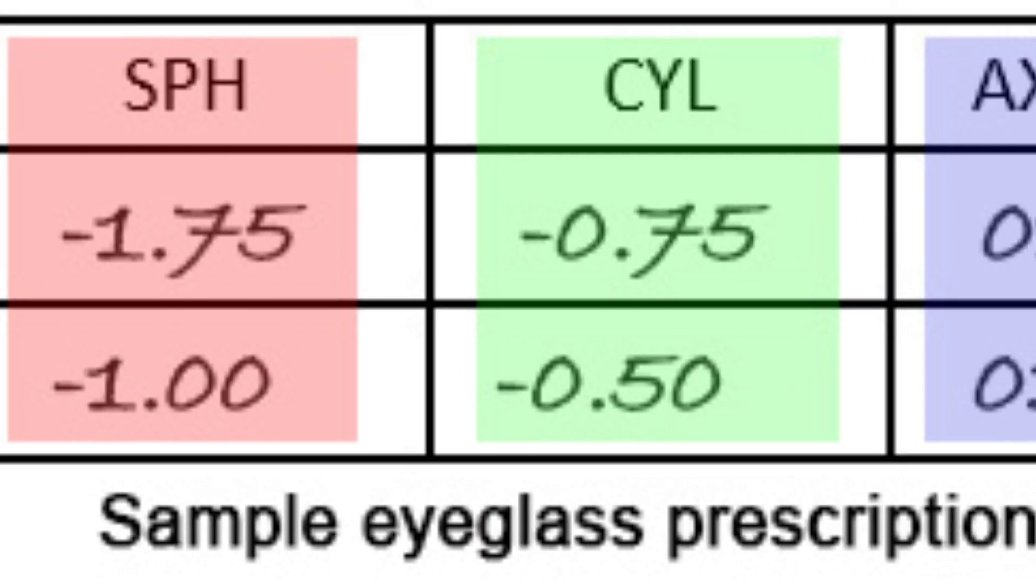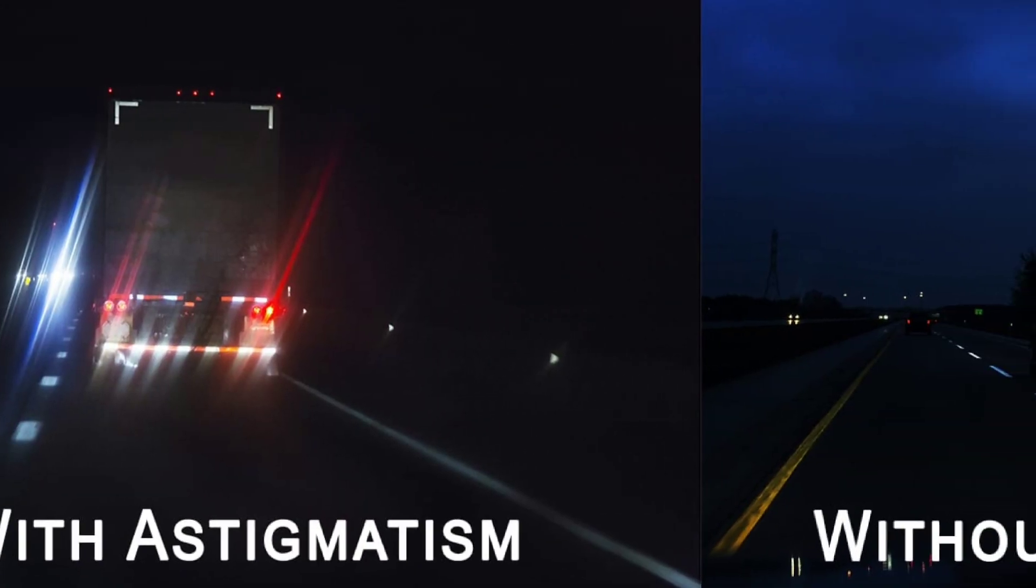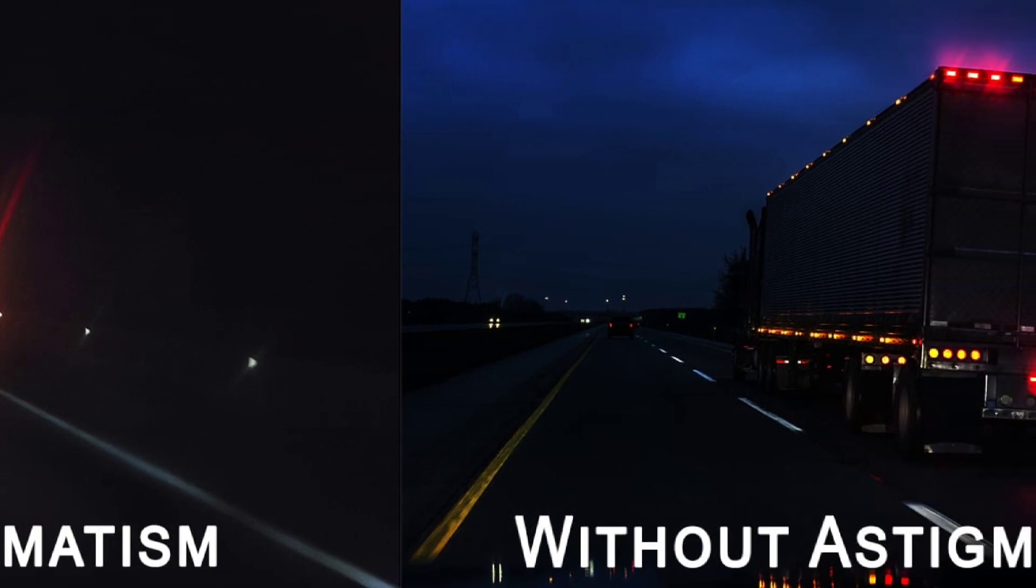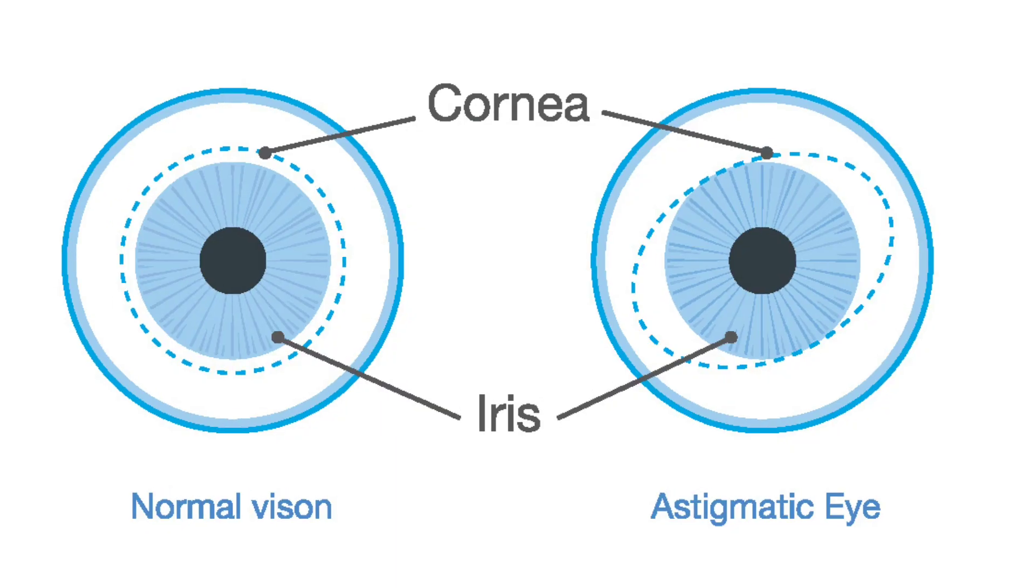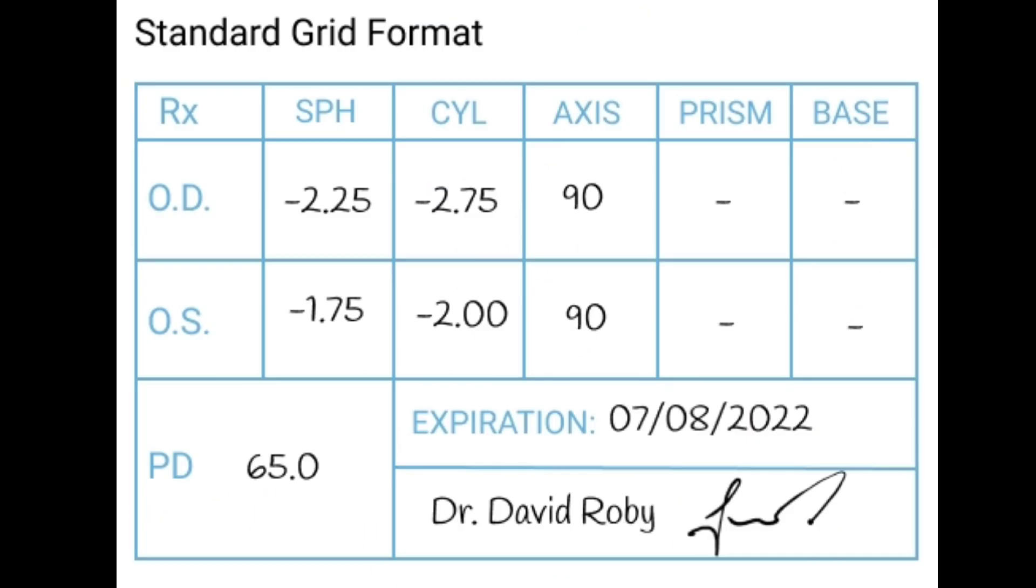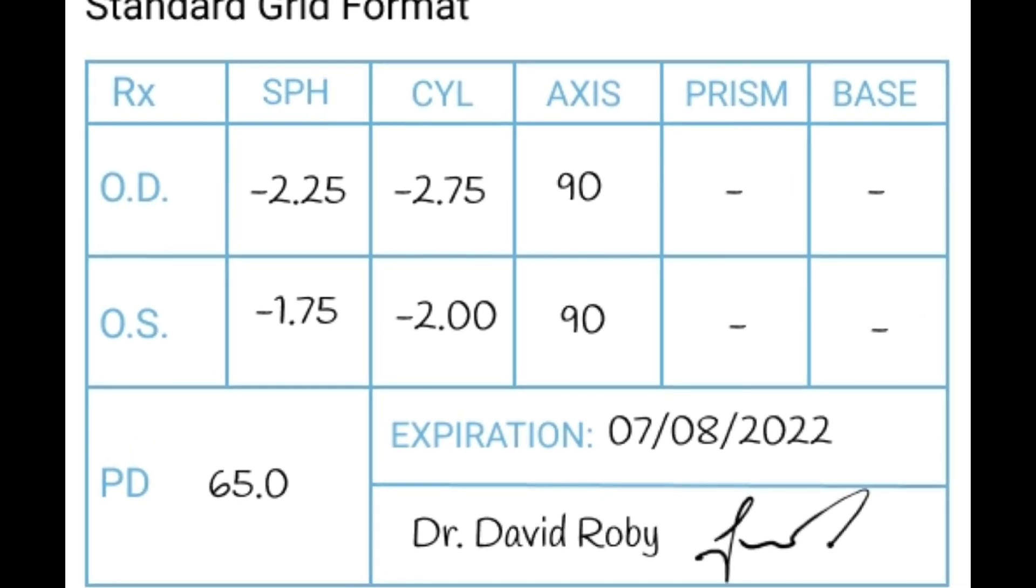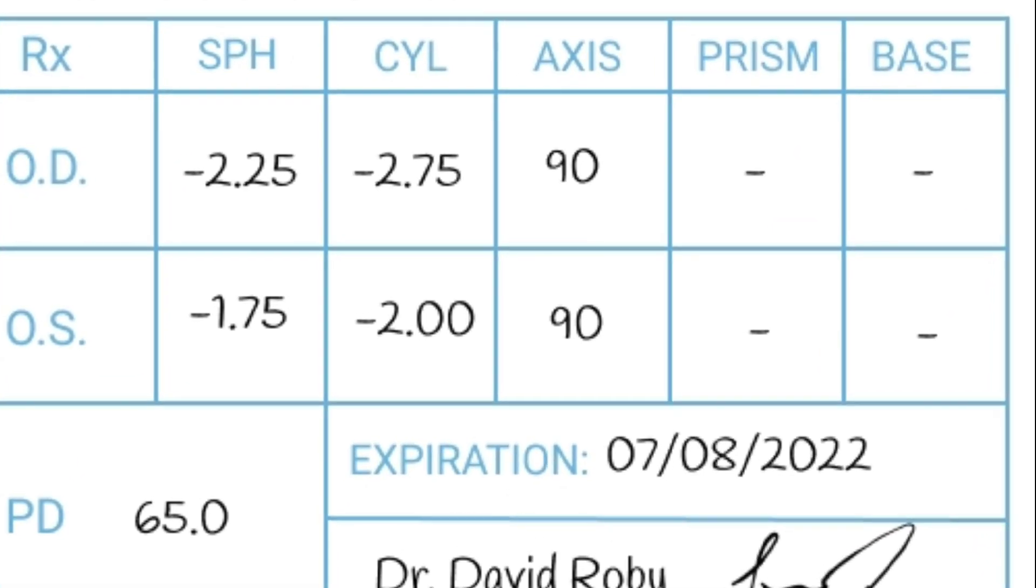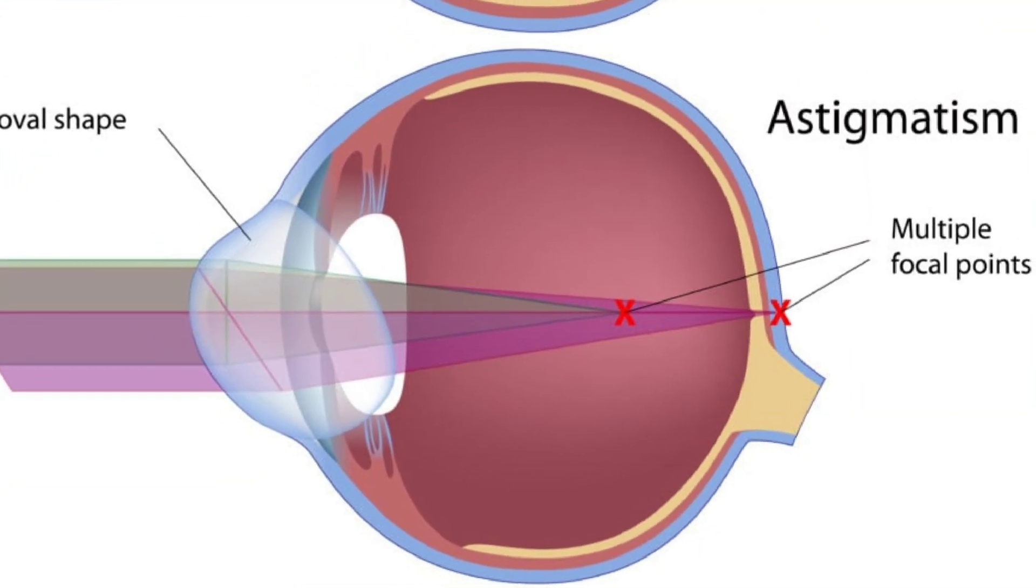The next specification is probably CYL or cylinder. If you have any number there, you have astigmatism. And the higher that number is, the more powerful your astigmatism is, so the more asymmetrical your eye is. The next value is probably axis, and that describes the orientation of your astigmatism. It lets you and your eye doctor know the direction in which you have that asymmetrical shape.